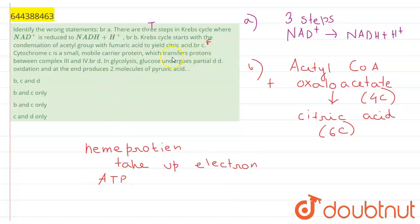The last statement given is: in glycolysis, glucose undergoes partial oxidation and at the end produces two molecules of pyruvic acid.